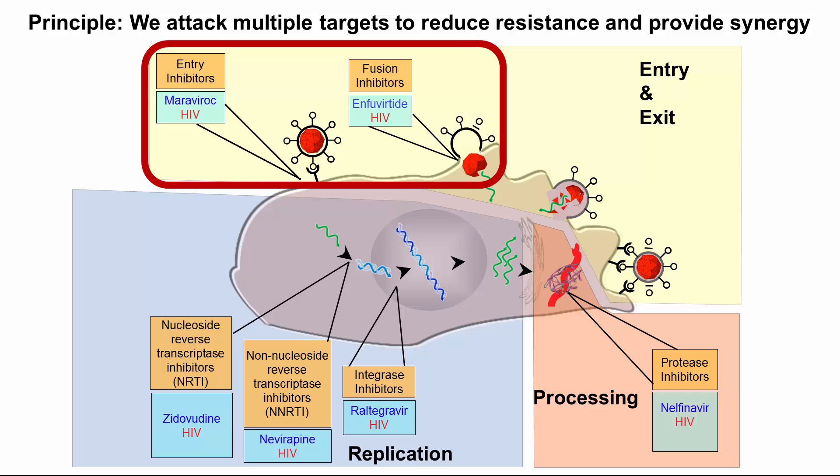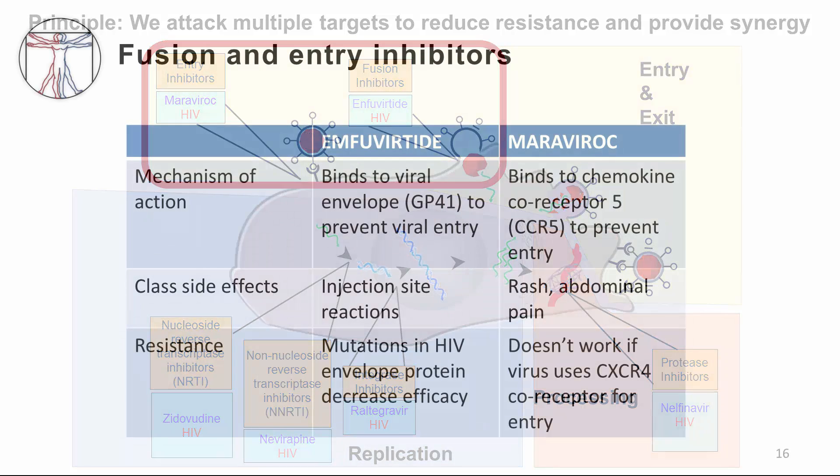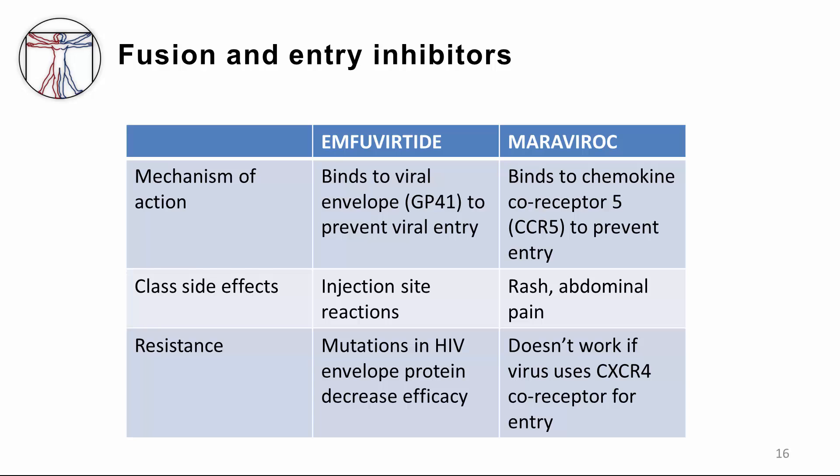Let's first start with the fusion and entry inhibitors. There are two drugs we will explore in this section. Enfuvirtide is a fusion inhibitor that acts by binding to GP41 in the viral envelope and prevents viral entry. Its main side effect is injection site reactions, since it's only given IM. Resistance can occur when mutations in the HIV envelope protein GP41 decrease efficacy.